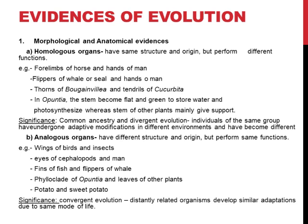Let us understand with some examples. Wings of birds and wings of insects: the wings of birds are formed by bones with feathers attached — the same bones as in the forelimb. But the wings of insects are made up of chitin because they have a chitinous exoskeleton. So we can see a different structure and origin — the wings of insects do not have any bones in them — but they perform the same function, that is flying.